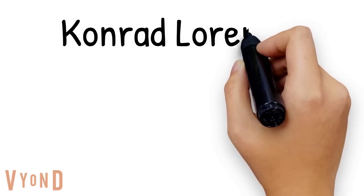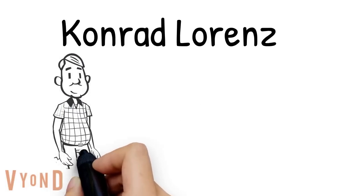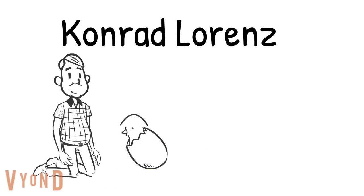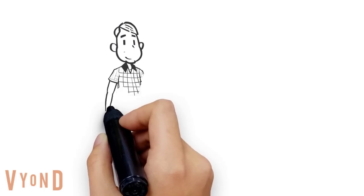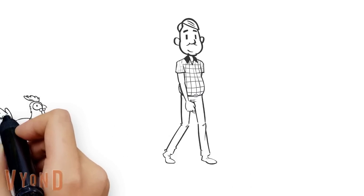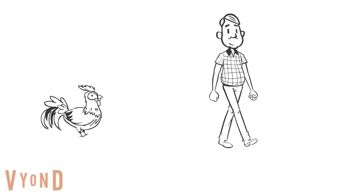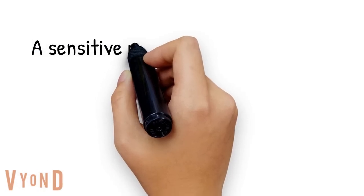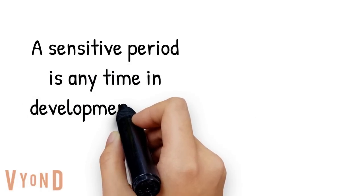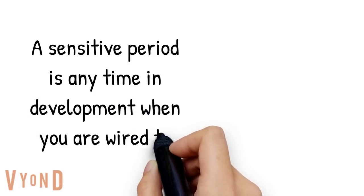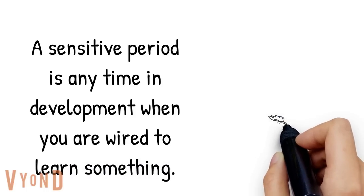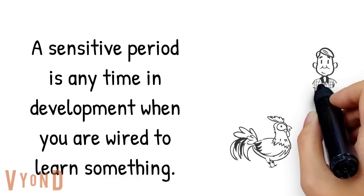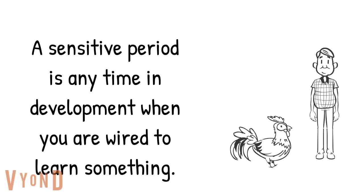Zoologist Conrad Lorenz watched baby geese hatch from their shells. He was the first face the geese saw once they hatched, and he realized that after hatching they would follow him wherever he went. The geese were wired to believe whatever they saw when they hatched was their mother. Lorenz defined a sensitive period as any period in development where you're wired to learn something or you're sensitive to something.